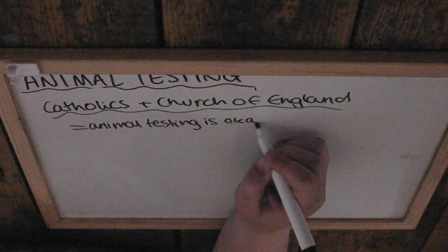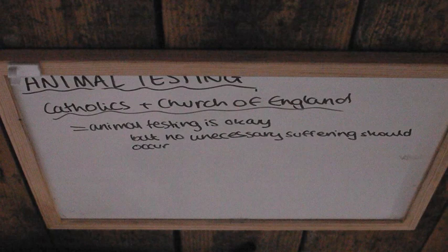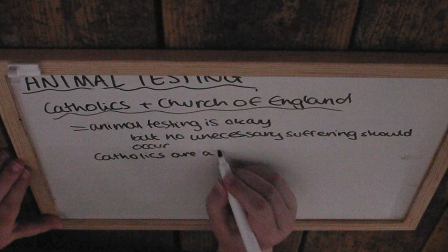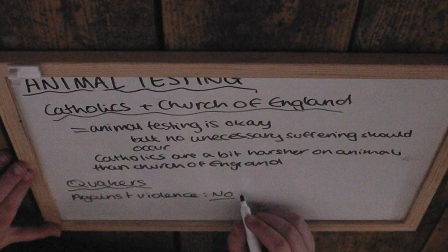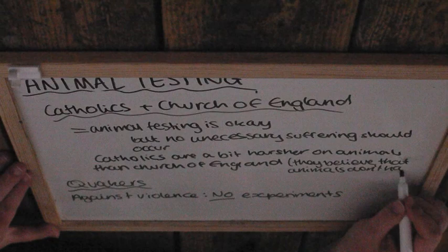Catholics and the Church of England have pretty similar views: animal testing is acceptable, but no unnecessary suffering should take place. However, Catholics are slightly stricter because they believe animals don't have souls. Quakers, on the other hand, are against violence, so they would be against animal experiments.